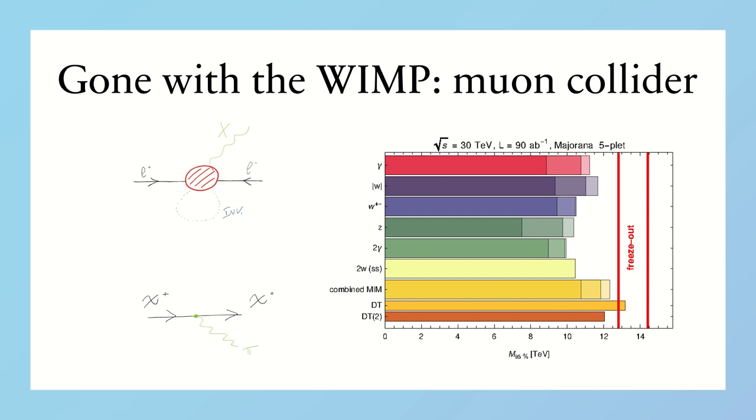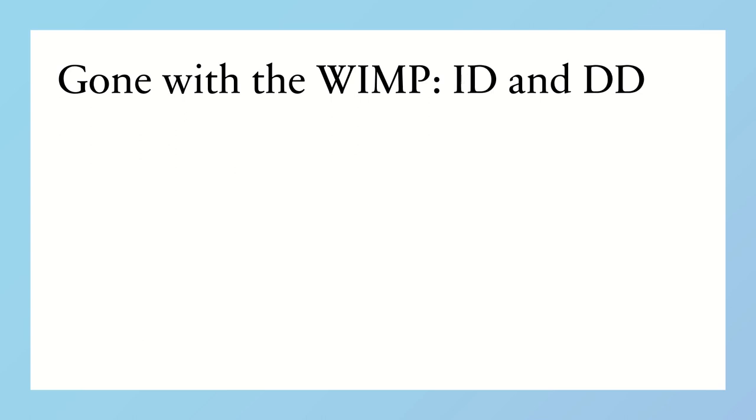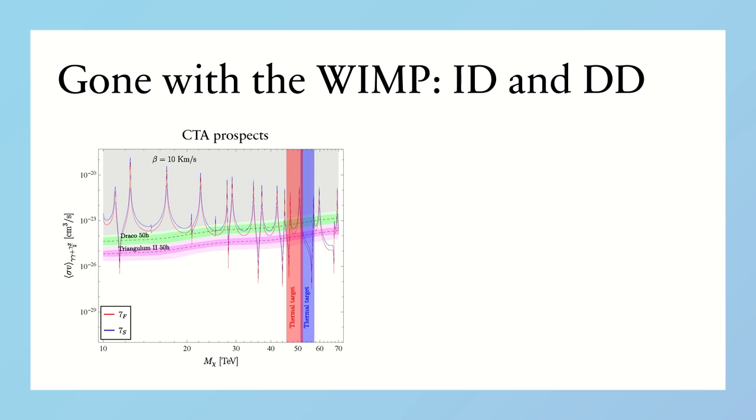So, what about larger multiplets? In this case, the main possibilities are offered by indirect and direct detection experiments. In this plot, we show the spectrum of monochromatic photons produced from the 7-plet dark matter annihilation in the halo of dwarf galaxies as a function of the dark matter mass. This is compared to the exclusion prospect of the future Cherenkov-based telescope CTA from the observation of the dwarf galaxies Draco and Triangulum. In the fermionic case, CTA is expected to detect or exclude the dark matter within the entire theoretical uncertainty on the thermal mass with both galaxies.